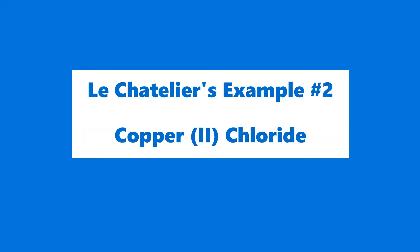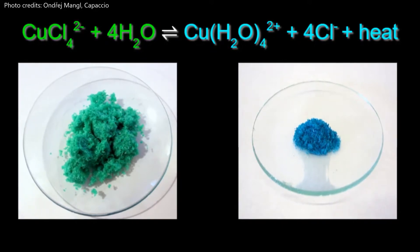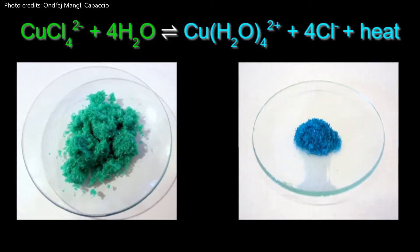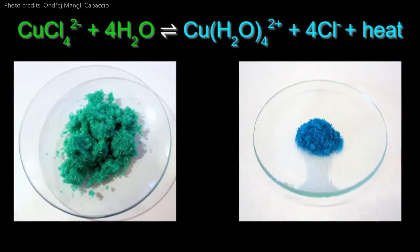The second experiment uses a solution of copper chloride. In this example, the forward reaction process produces a blue colored solution, and the reverse process produces a green colored solution.